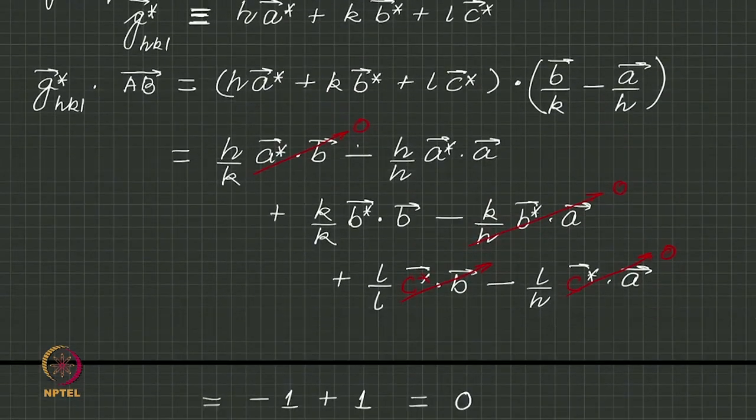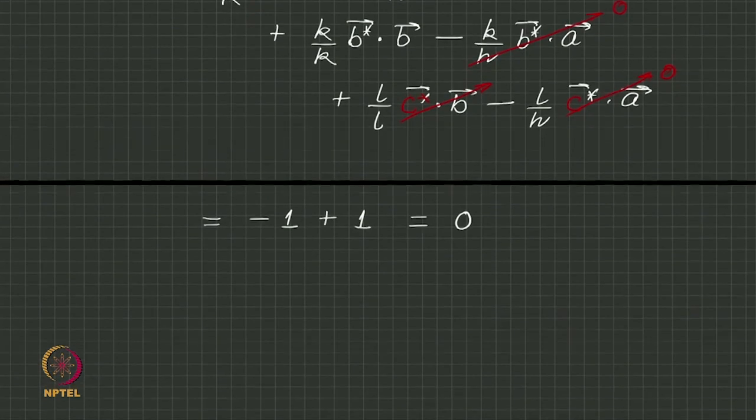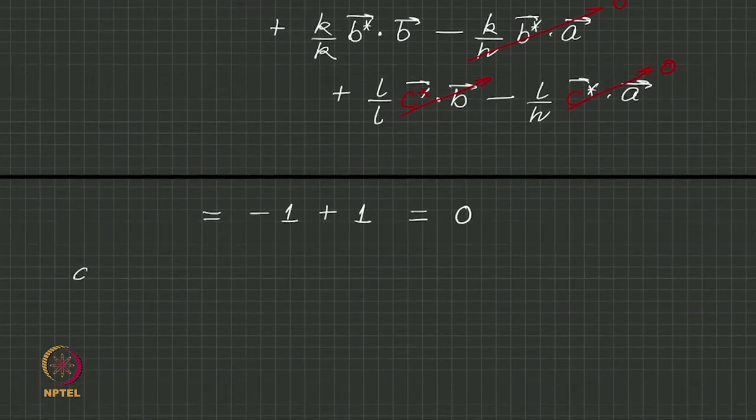Similarly, I have done it in detail, but you can convince yourself now for the other relation that g star h k l dot a c also you will find to be 0 when you expand and work it out like this.